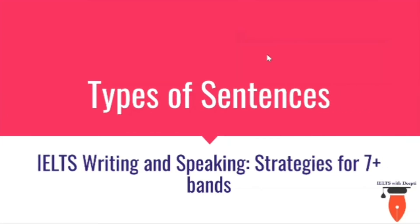Hi everyone, my name is Deepti. Welcome back to my channel, a place where you can learn at your own pace. In today's video, we are going to discuss the different types of sentences that you can use in your writing and speaking section. Using only basic or simple sentences will not give you seven plus bands, so it is important to use a variety of sentences to score more than seven bands in your IELTS exam. Let's start.